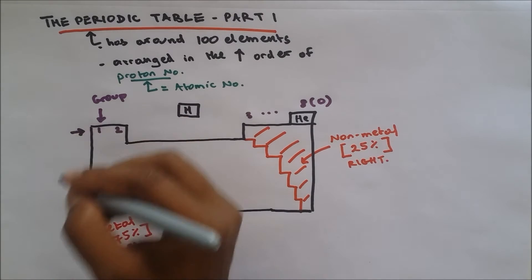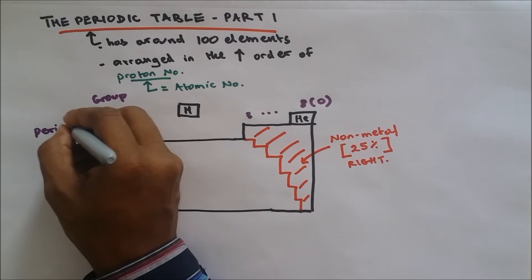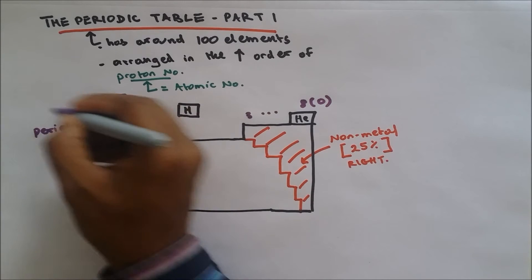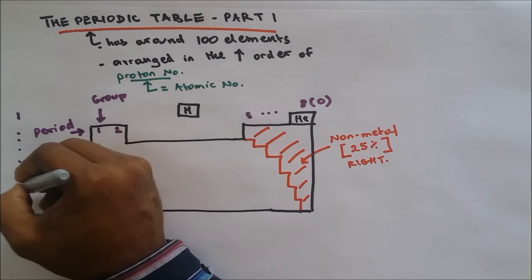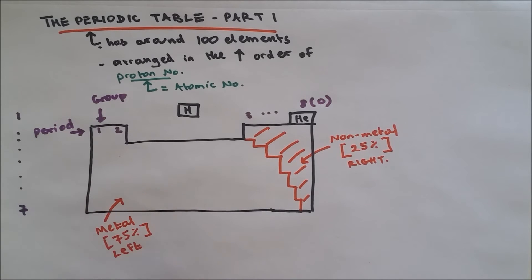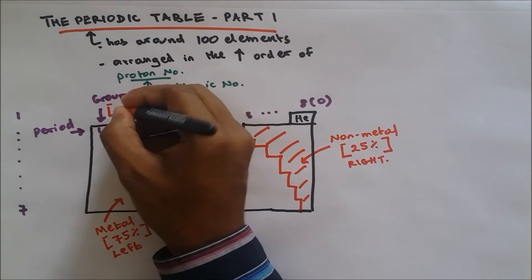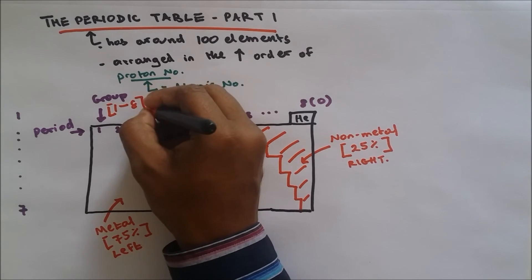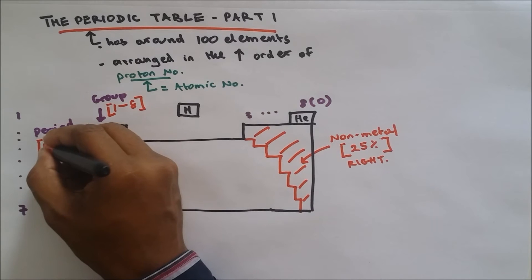Now the rows, the rows are called period. And period goes from number one, starting from the hydrogen one, and then it goes up to number seven. So important things to note, group goes from one to eight or one to zero because eight is zero. And period is one to seven.